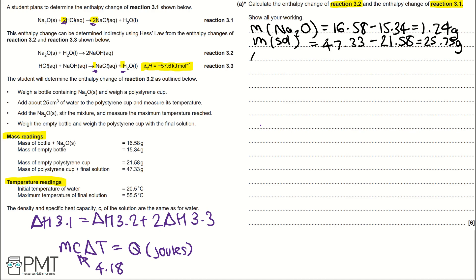Then, working out our temperature change, or delta T, we take 55.5 and minus 20.5 to give us 35 degrees Celsius. Plugging this into the equation, mass would be the mass of solution because that's the thing that's having its temperature measured and temperature changed. So, 25.75 multiplied by 4.18 multiplied by 35 would give us 3,767.225 joules.